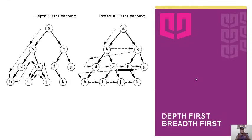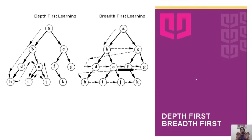The second category is known as breadth-first learners. What they do is cover the width of the subject first. For example, if we are learning mathematics, they cover each topic and each chapter first. Combining both categories creates a good approach, so at the first stage everyone has to be a breadth-first learner and cover the width of the subject.